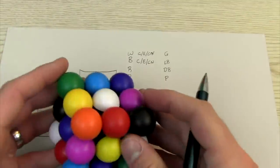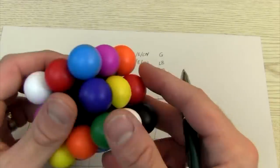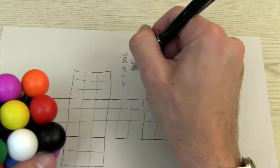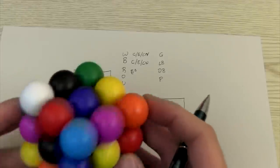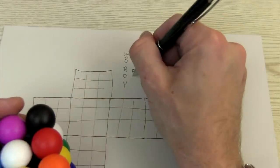And then red was an edge, edge, edge. So I'm going to put three edges. Orange was corner, edge, center, and so on.